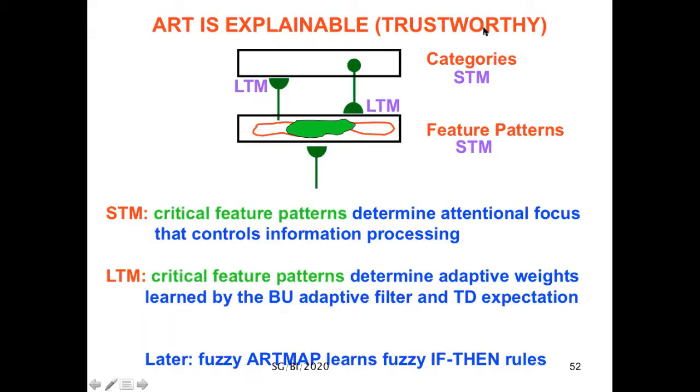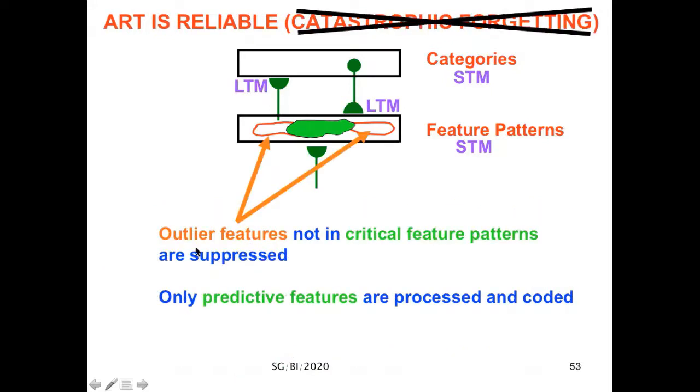ART is explainable or trustworthy because the critical feature pattern determines an attentional focus that controls information processing. By looking at these features, you know what is driving decision making. The critical feature patterns also determine the adaptive weights that are learned by the bottom-up adaptive filter and the top-down expectation, thereby controlling learned prediction. Moreover, ART is reliable. You don't get catastrophic forgetting because the outlier features not in the critical feature pattern are suppressed so that only predictive features are processed and coded. These outliers, which could have caused catastrophic forgetting, are actively inhibited.